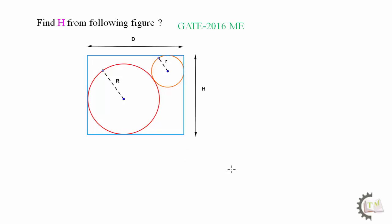Find H from the following figure. This question was asked in the 2016 mechanical engineering paper and it is a typical geometrical question belonging to class 10 standard. You have to find the value of H, where a rectangle has one side H, and inside the rectangle there are two circles — a bigger circle with radius capital R and a smaller circle with radius small r.